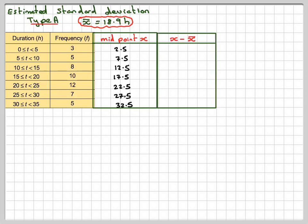Then we work out how far each piece of data is away from the mean. Each of these midpoints, how far they're away from the mean. You can see that 2.5 minus 18.9 gives me minus 16.4, and so on.